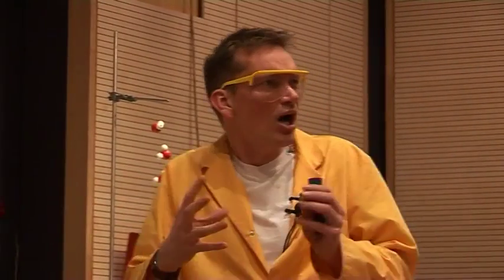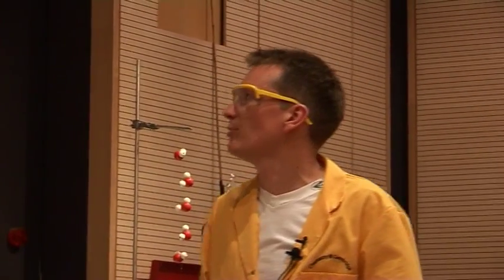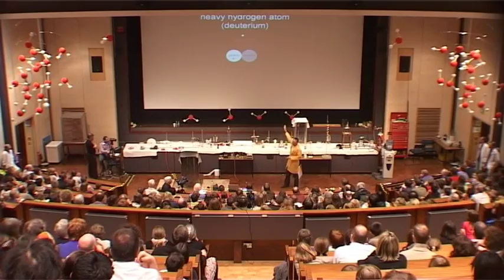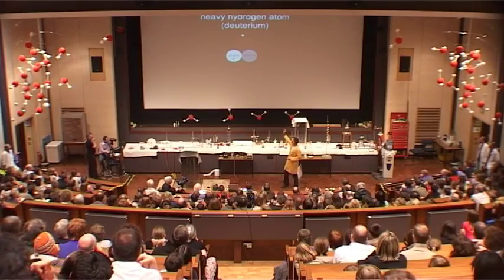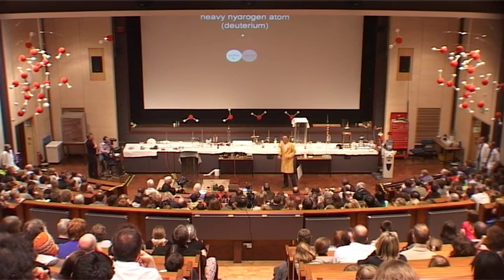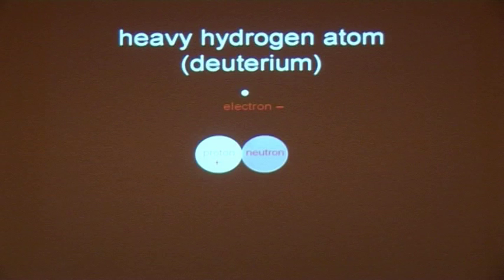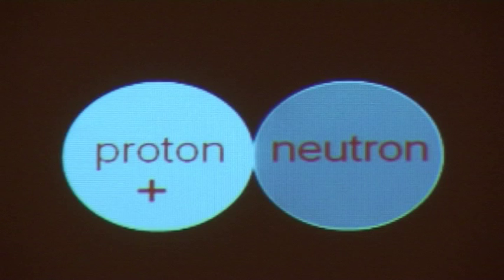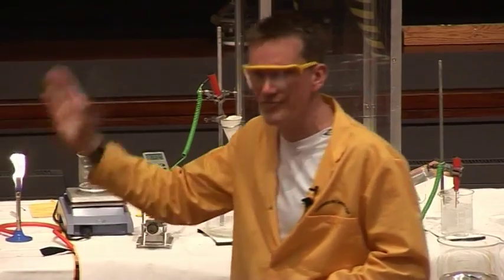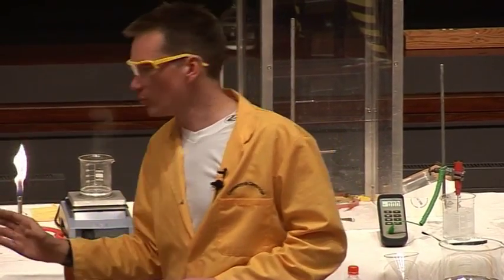A heavy hydrogen atom is a different type of hydrogen. It still has the same chemical properties pretty much as normal hydrogen, but this one still has one electron, still has one proton — and that's the thing that makes it a hydrogen atom — but this time it has a neutron as well. The neutron has about the same mass as the proton, and this means that the mass of the heavy hydrogen atom is actually twice that of a normal one.